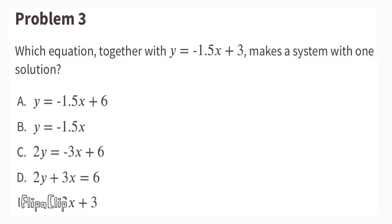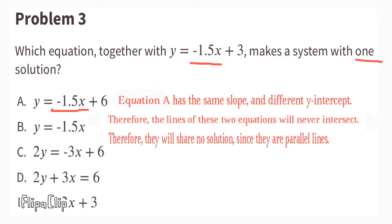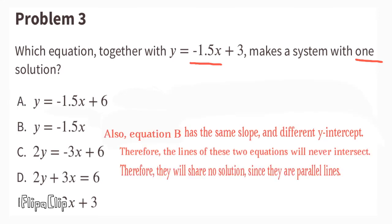Problem number three: which equation, together with y equals negative 1.5x plus 3, makes a system with one solution? Equation A has the same slope and different y-intercept — the lines will never intersect, sharing no solution since they are parallel. Equation B also has the same slope and different y-intercept, so those lines are also parallel with no solution.